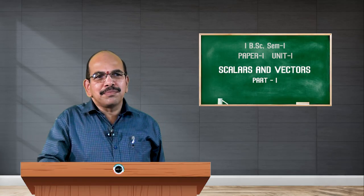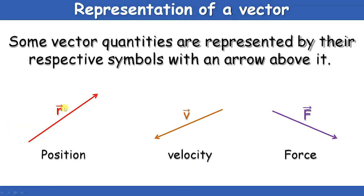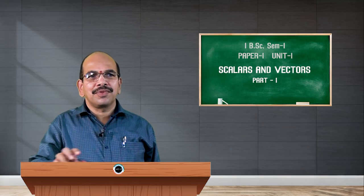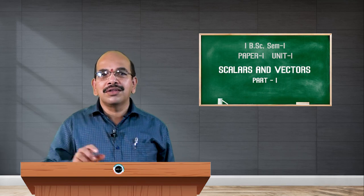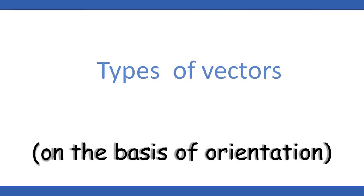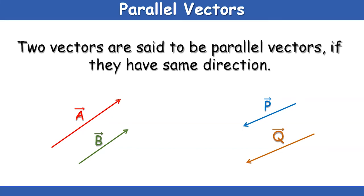These are different examples: the position vector is represented as vector R, velocity is normally taken as vector V, and force is normally taken as vector F. Now let us talk about different types of vectors on the basis of orientation. If you look at these vectors, there are four vectors — vector A and vector B. Vector A is larger than vector B in magnitude, but both are in the same direction. Therefore, we call these parallel vectors. The arrow marks are parallel to each other. Similarly, P and Q are both parallel vectors as the directions are the same.